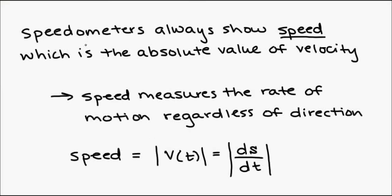Velocity is different from speed because speed is the absolute value of velocity. So a speedometer on your car shows you speed. It doesn't show you what direction you're moving in. And speed measures the rate of motion regardless of direction. So it is absolute value of V(t), absolute value of dS/dt. That is speed. So speed and velocity are different in calculus and in physics.